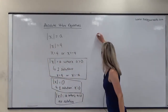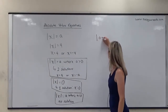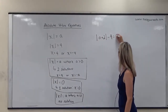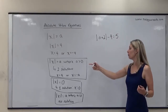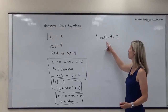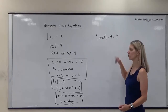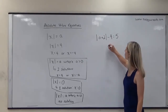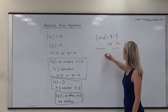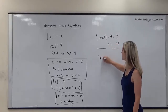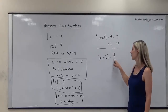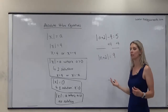For example, if we have the absolute value of (n + 2) minus 4 equals 5, we can't yet determine the number of solutions because the absolute value is being subtracted by 4. So first, we add 4 to both sides, giving us the absolute value of (n + 2) equals 9.